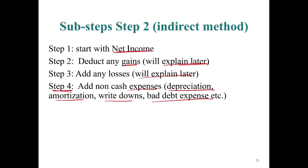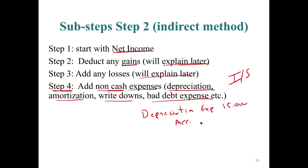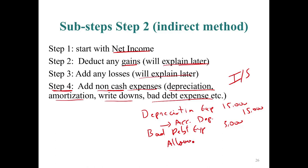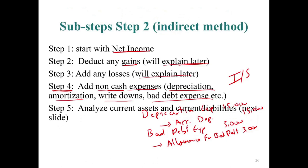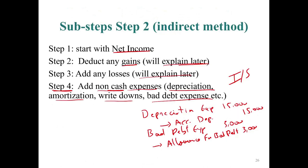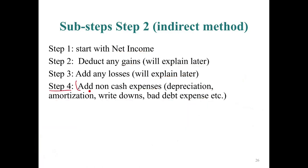For bad debt expense, we debit bad debt expense $3,000 and credit allowance for bad debt $3,000 — again, no cash credited. Those are non-cash expenses. So what we do is add those non-cash expenses back. Step five: analyze current assets and current liabilities — specifically non-cash current assets — and we add back depreciation and similar non-cash expenses.